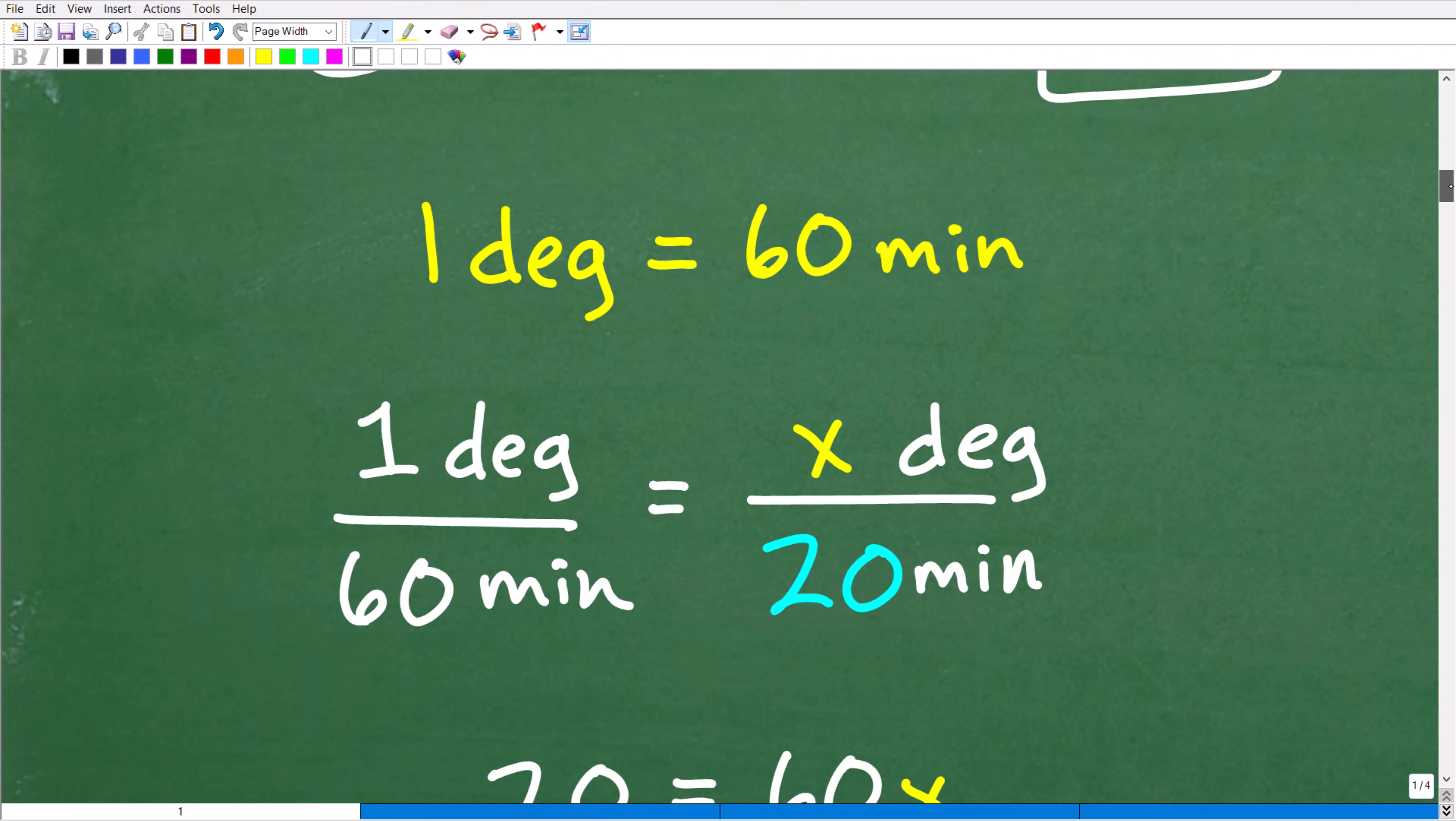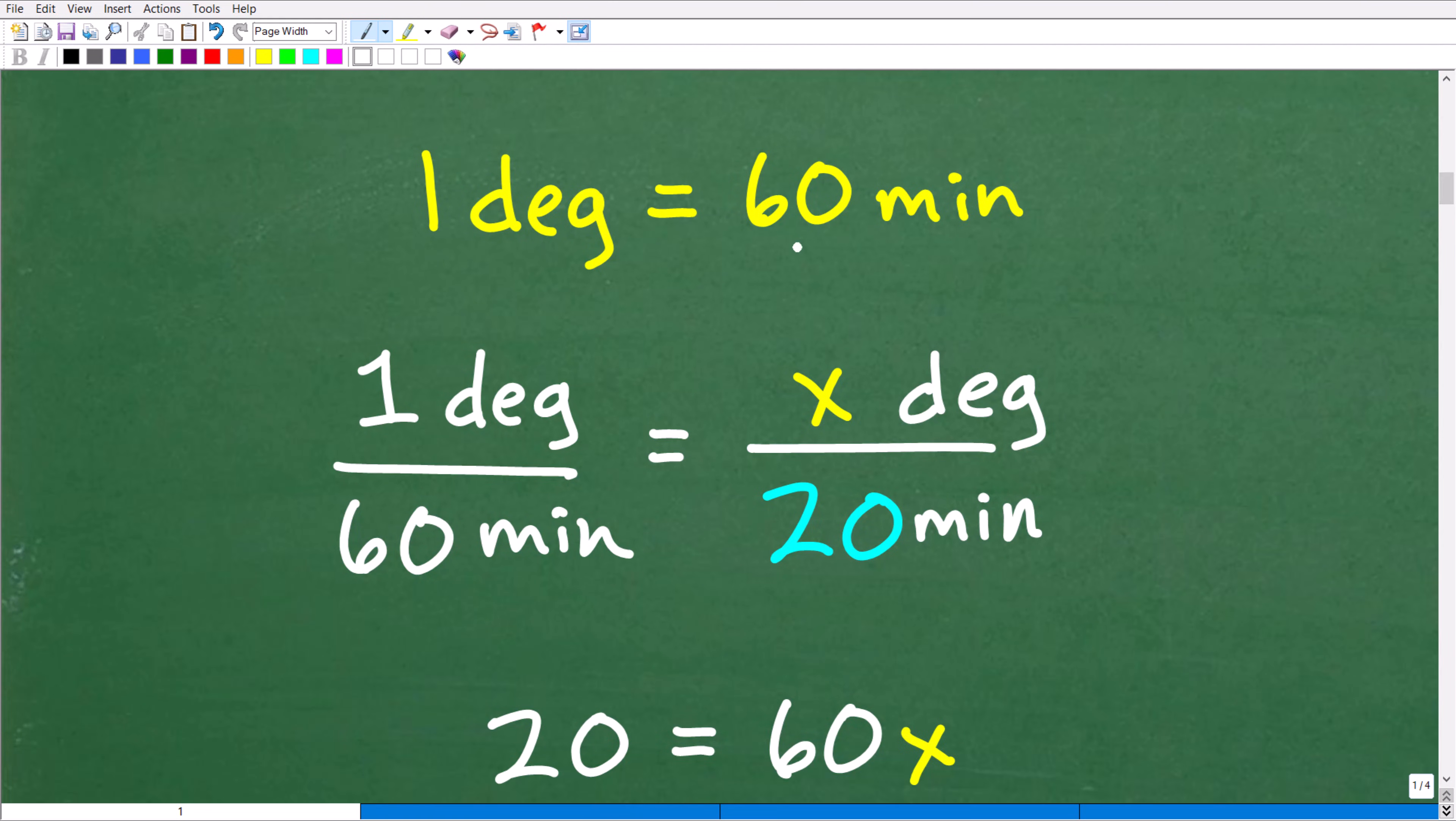So basically, that is what we need to do. Once we have this as a full decimal value, we can go ahead and punch that into our calculator and figure out the answer. So let's go ahead and see how we do this. It's not that difficult at all. So again, one degree equals 60 minutes. So think hours, minutes, and seconds. So here, we want to know how many degrees is 20 minutes.